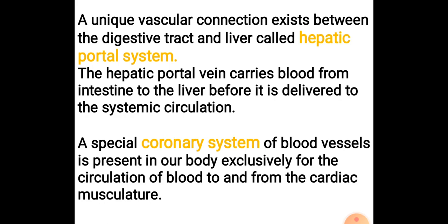Apart from this, there is a special type of coronary system of blood vessels present exclusively for the circulation of blood to and from the cardiac muscles. This coronary system consists of many blood vessels running throughout the heart to supply it with blood. This concludes our discussion of double circulation. Hope you all have understood. Thank you everyone.